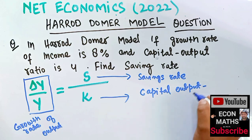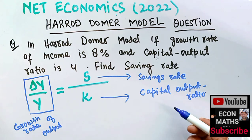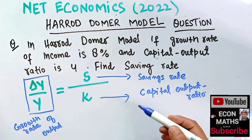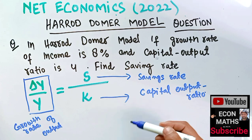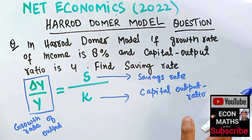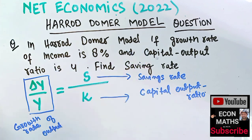And K denotes the capital-output ratio. The capital-output ratio simply tells us how many units of capital we need to use to produce one unit of output.